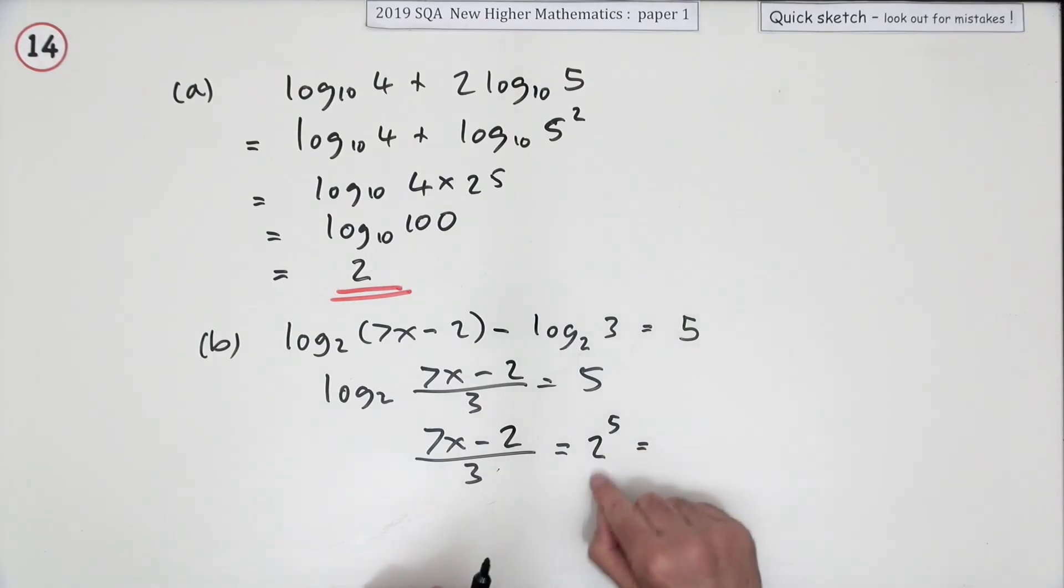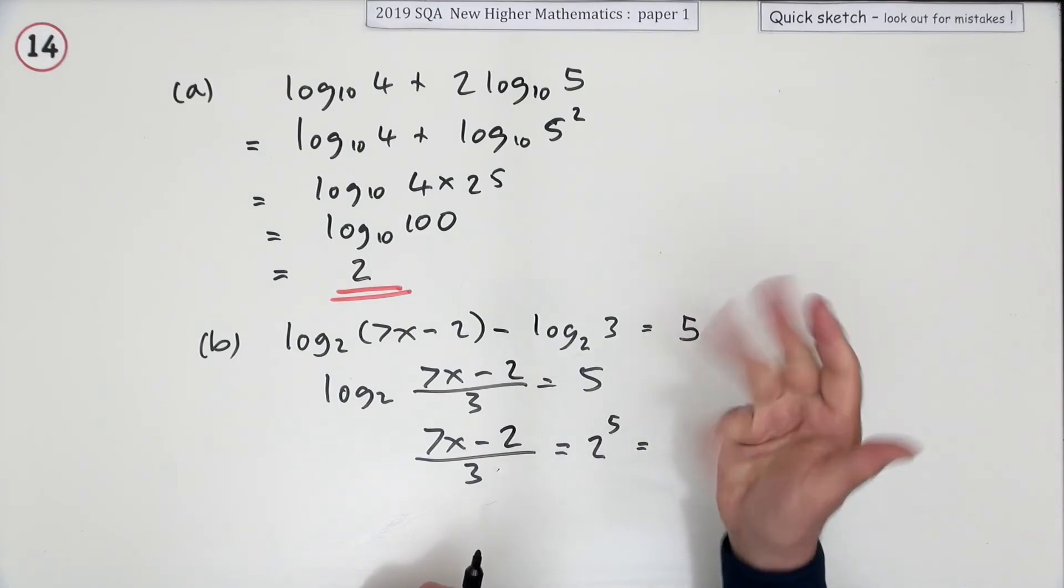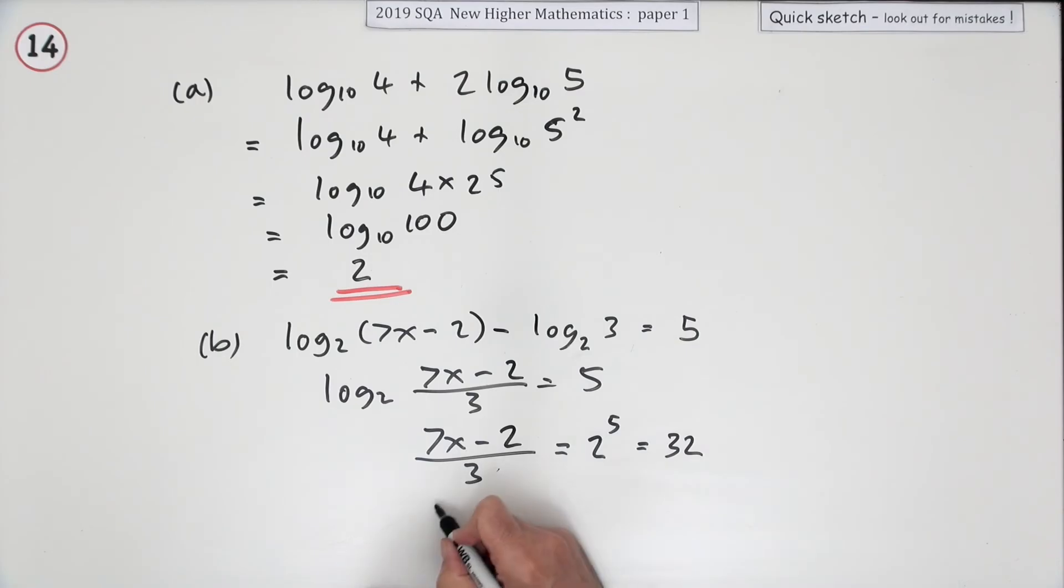Now get rid of the 3. 7x minus 2 is 96. Bring the 2 over, 98. Divide by 7, x is 14.